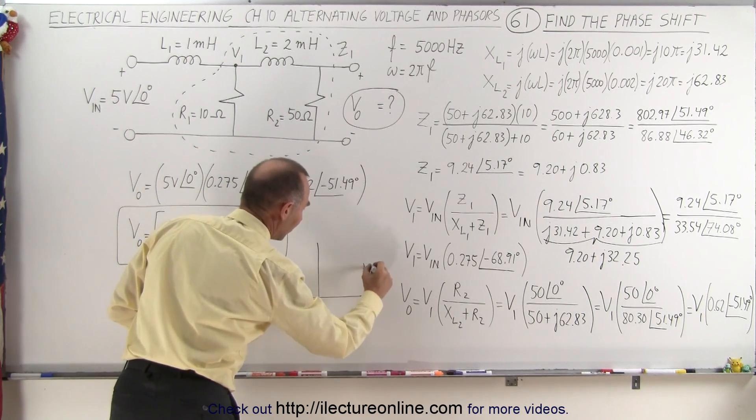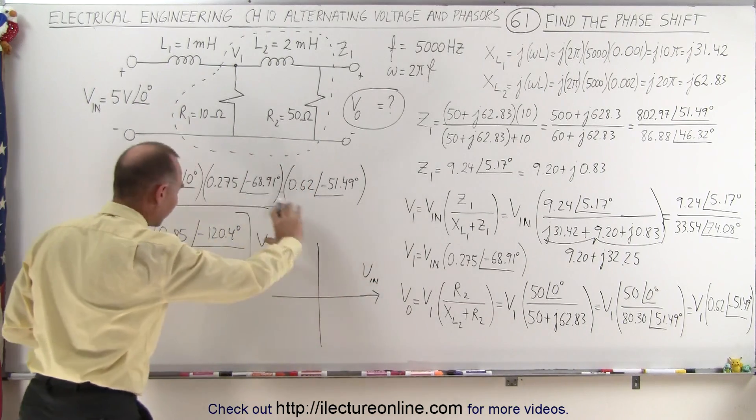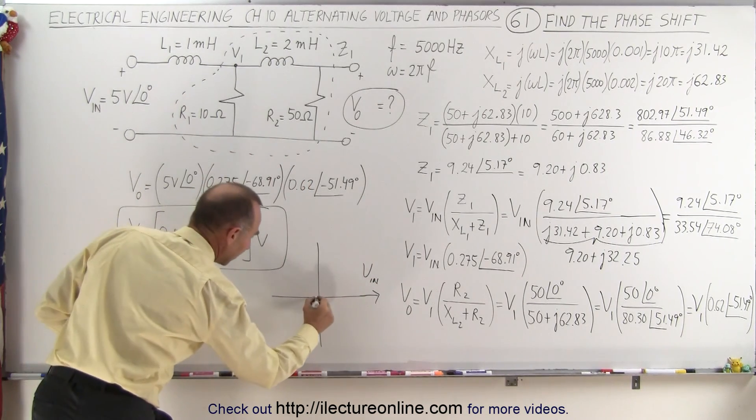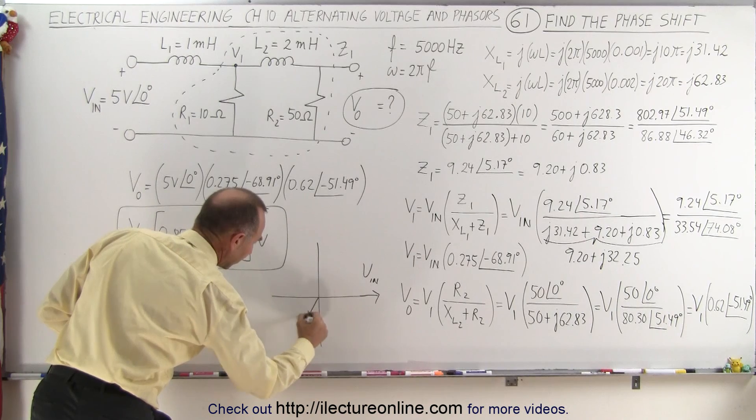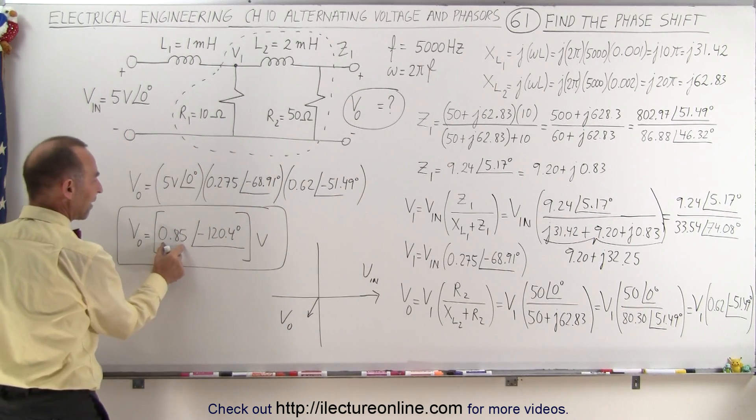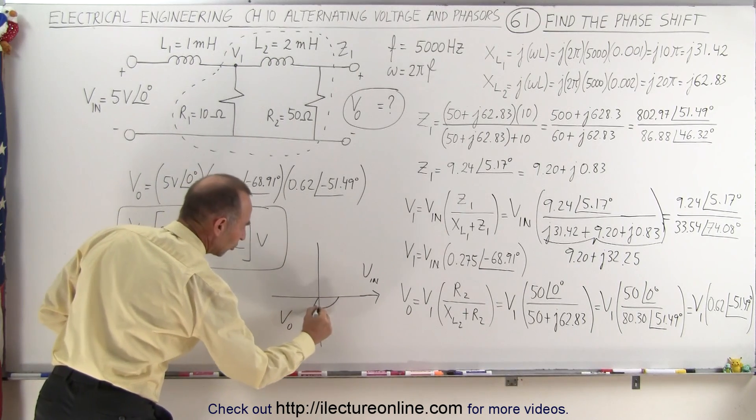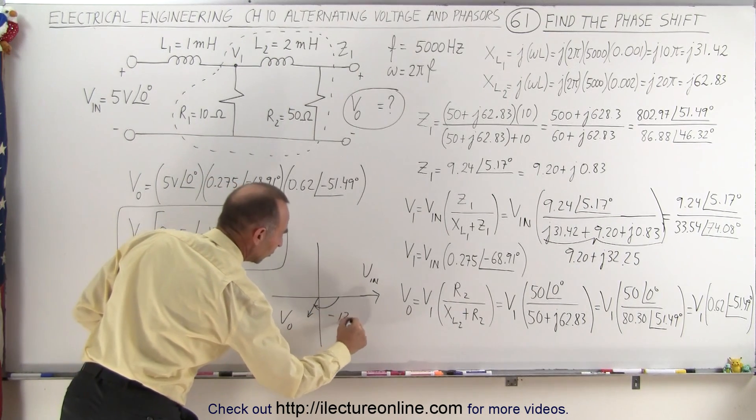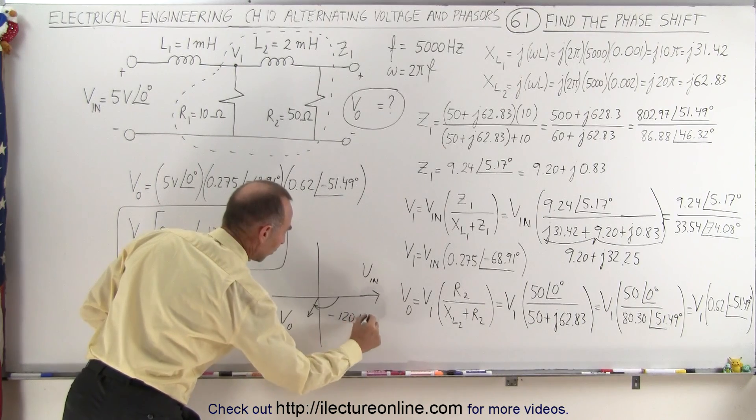Vin, that would be 5 volts. The output voltage would have a lag of 120 degrees, much smaller. There would be Vout. So you notice that the magnitude would be 0.85 volts instead of 5 volts with an angle shift of minus 120.4 degrees.